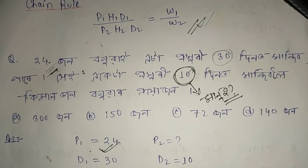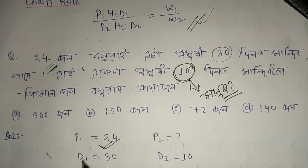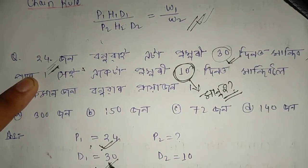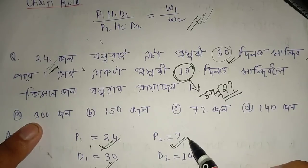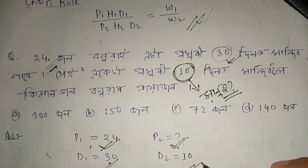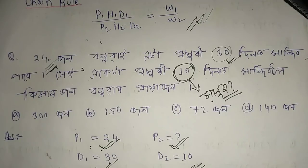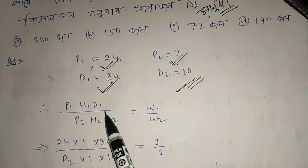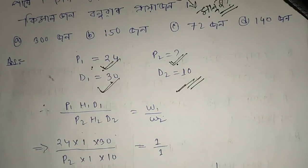I will set up the formula for the first person. D1 is 30. So D1 is 30. Now for P2, and D2 is how many days? I will give you 20 days. W1, W2, H1, and H2 — we will put these into the formula.